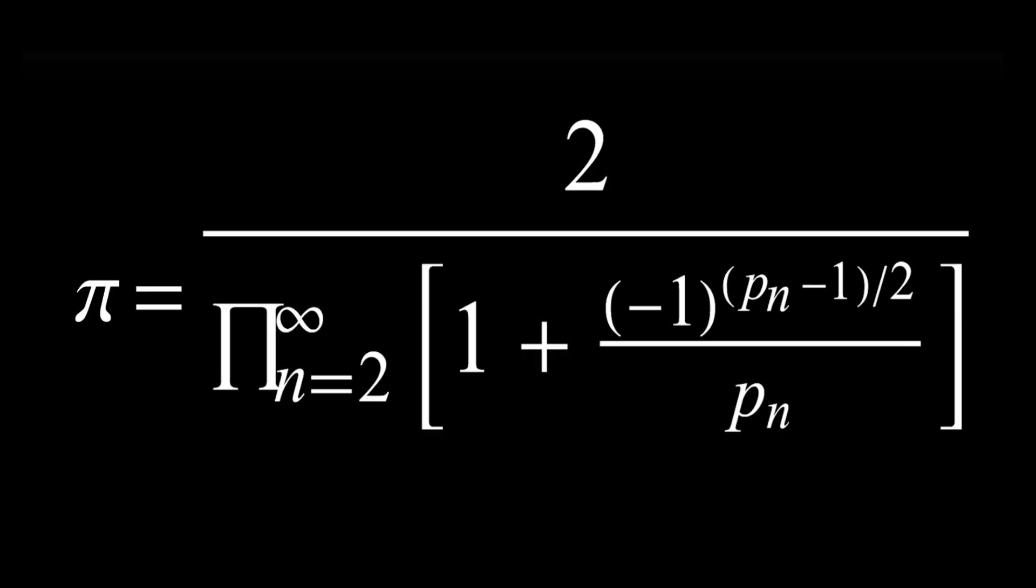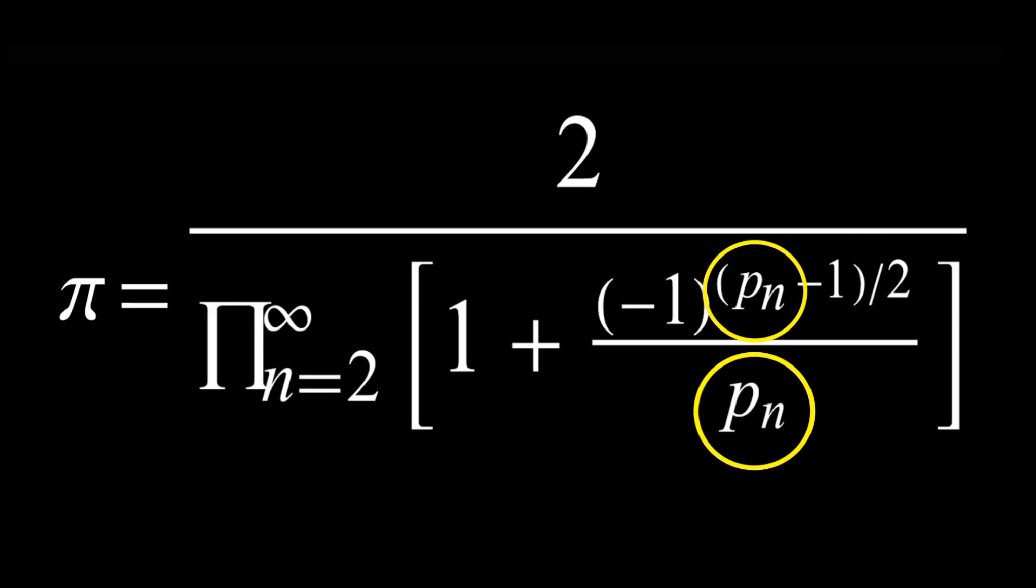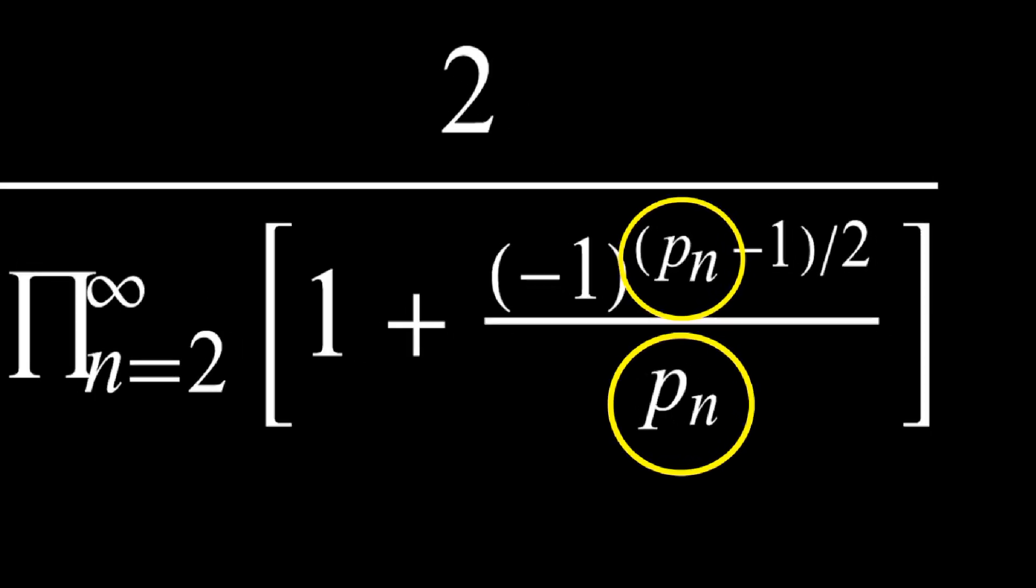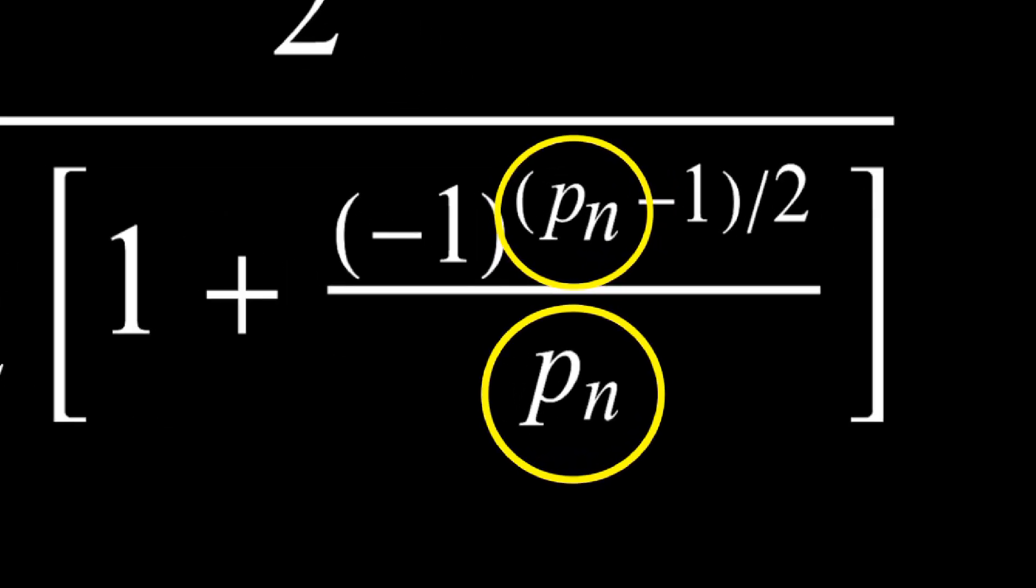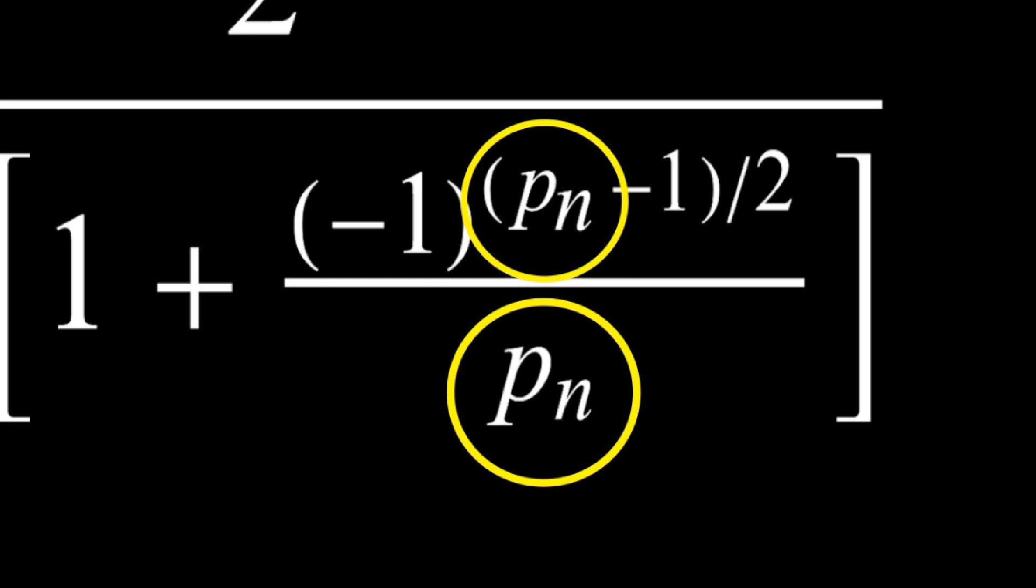Here's the formula for that product. The term p sub n actually stands for the nth prime number. So there's some crazy relationship being expressed here between pi and the prime numbers.